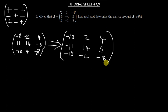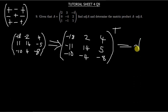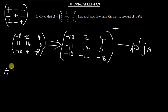After finding the matrix of cofactors, you now just transpose it. The transpose of the matrix of cofactors is what is called the adjoint. So the adjoint of A is simply the transpose of that cofactor matrix.